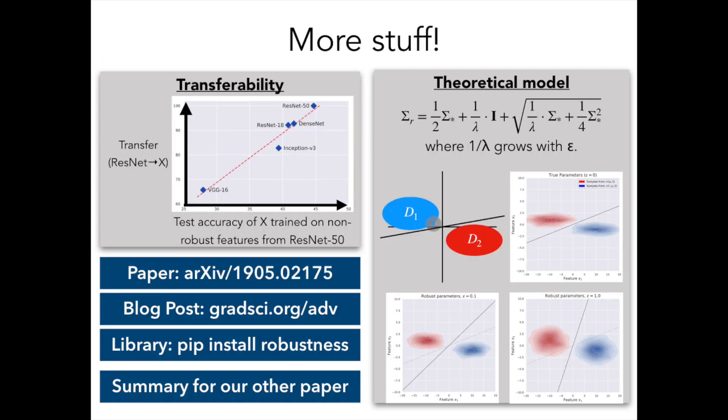Thanks for watching our paper summary. You can find links here and in the description for our paper, blog post, and the robustness library, our open source framework for modularly training and manipulating standard and robust classifiers. You can also find a link to the summary video for our other NeurIPS 2019 paper showing the applications of robust classifiers to image synthesis tasks.